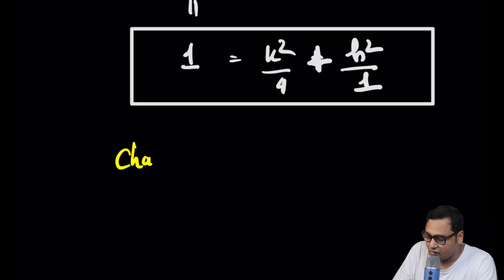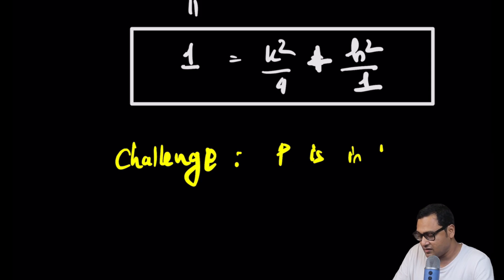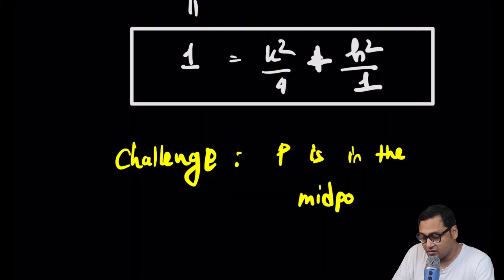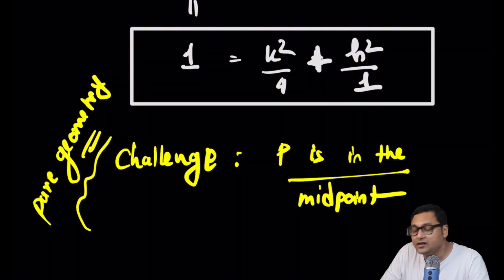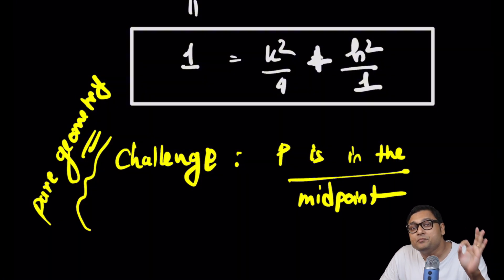I hope you learned something from this video. Here is a challenge problem: if P is the midpoint of the ladder, what is the locus of point P? We can discuss this in two ways — one using coordinate geometry and trigonometry as we have done, and another using pure geometry. Can you find the locus of point P when it's the midpoint of the ladder using pure geometry? I think you will have a lot of fun with it.